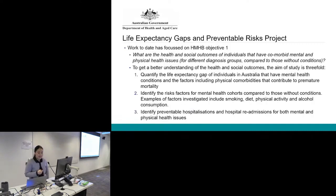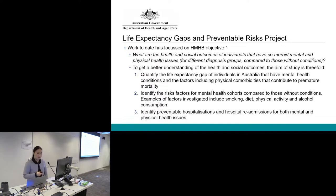The work done so far has been focused on the first objective of the Healthy Minds, Healthy Bodies project: trying to answer the question, what are the health and social outcomes of individuals that have comorbid mental and physical health issues for different diagnosis groups compared to those without such conditions?